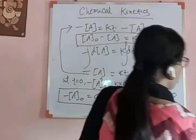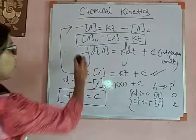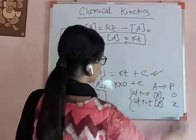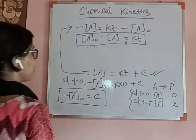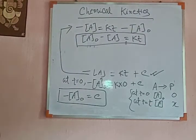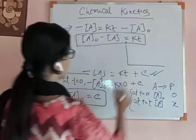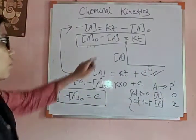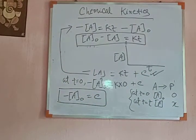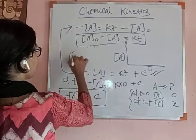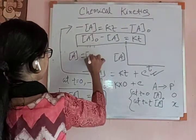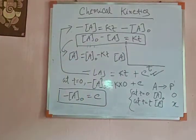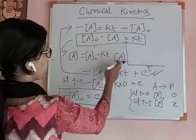This is called the integrated rate law for a zero order reaction. From here we can explain the graphical representation of a zero order reaction. If we draw the concentration of A versus time T, we get a specific graph.